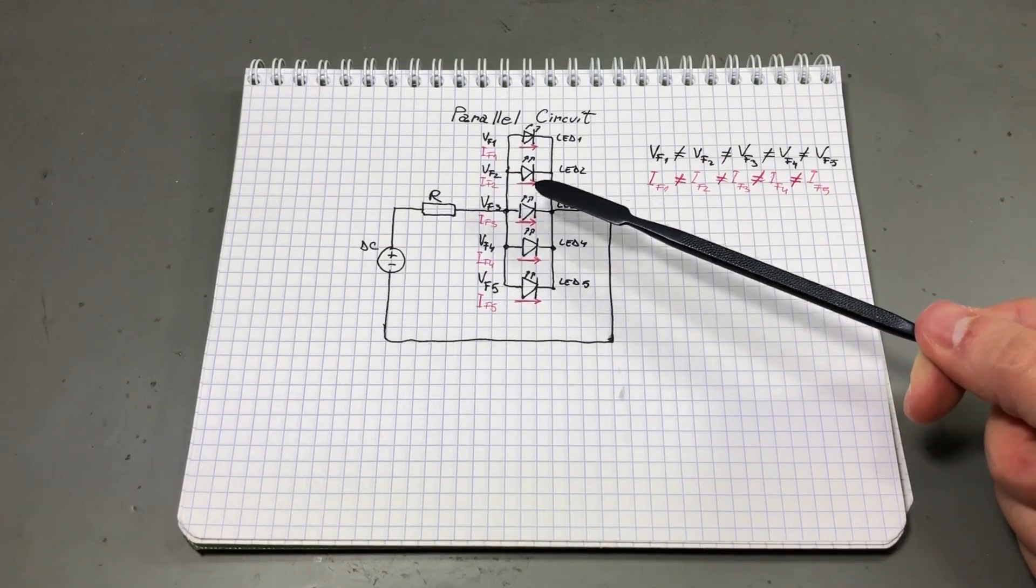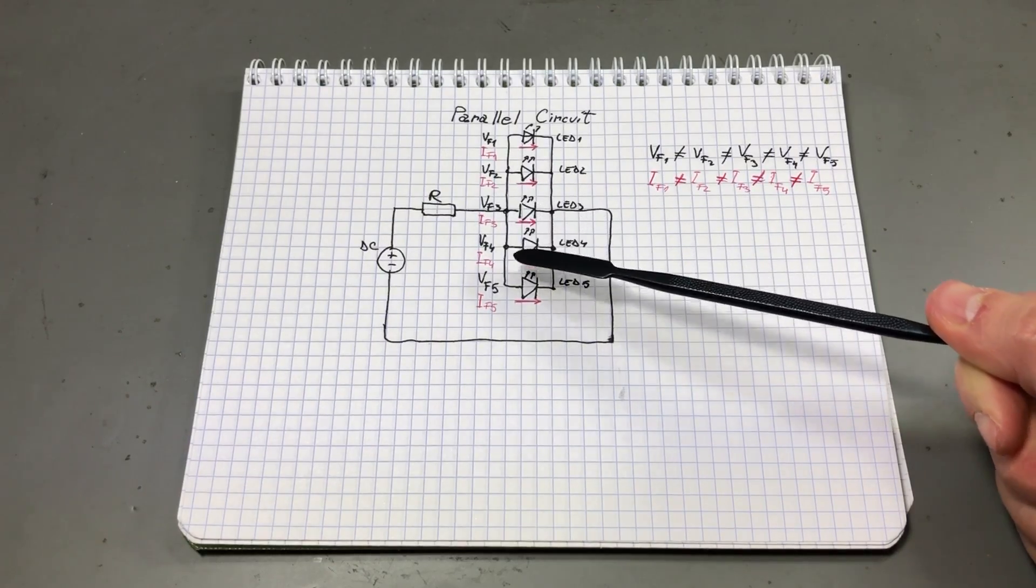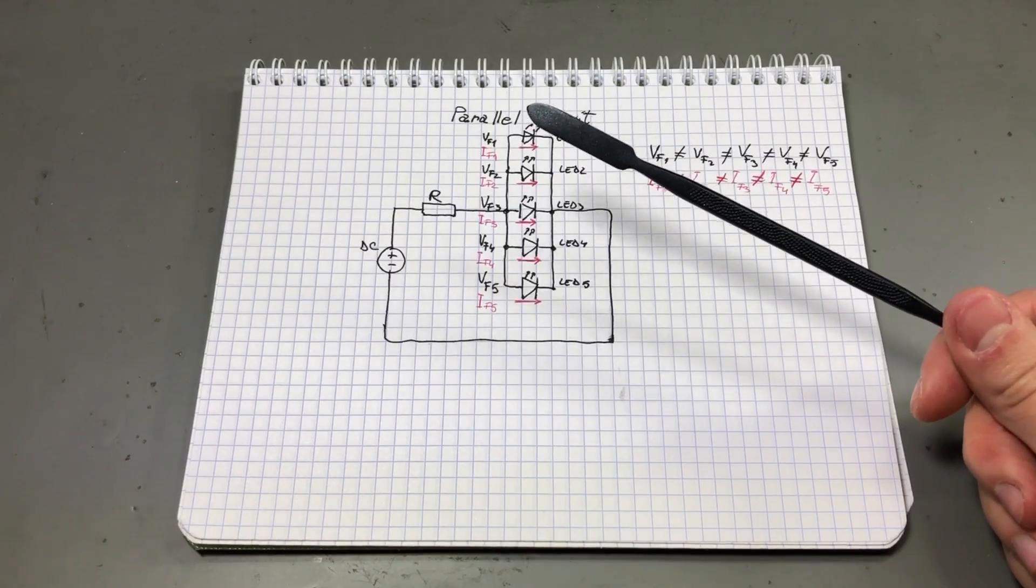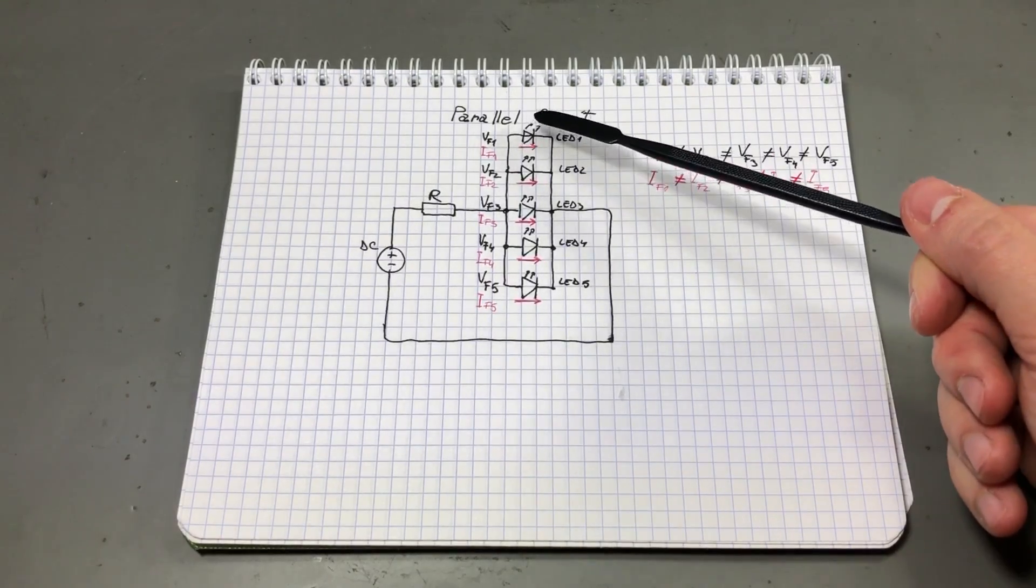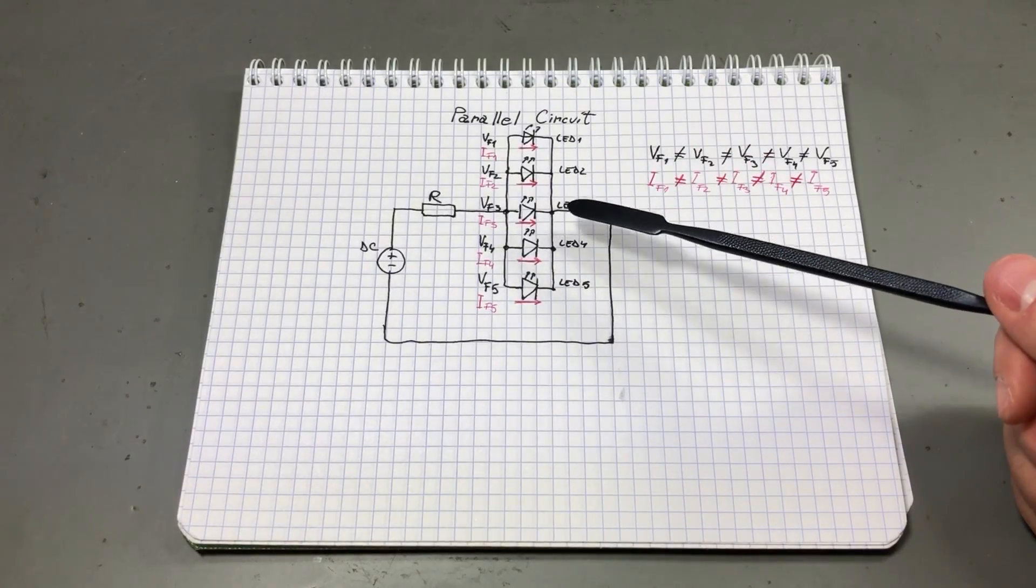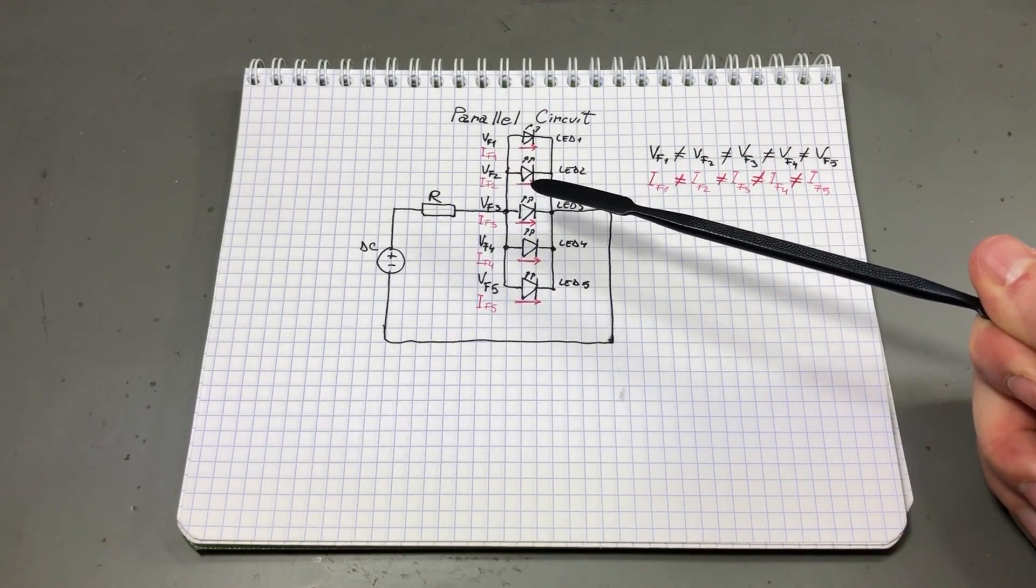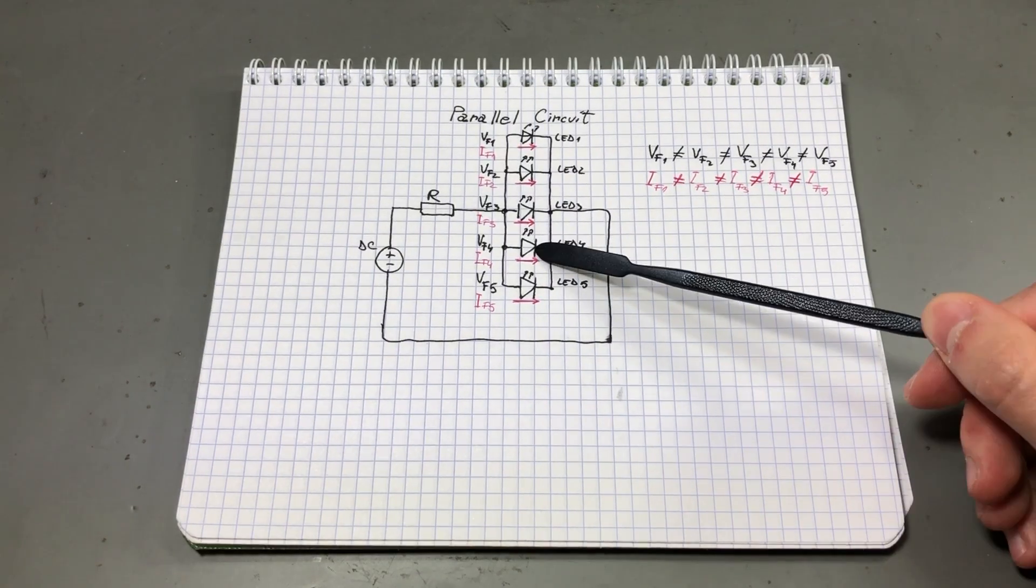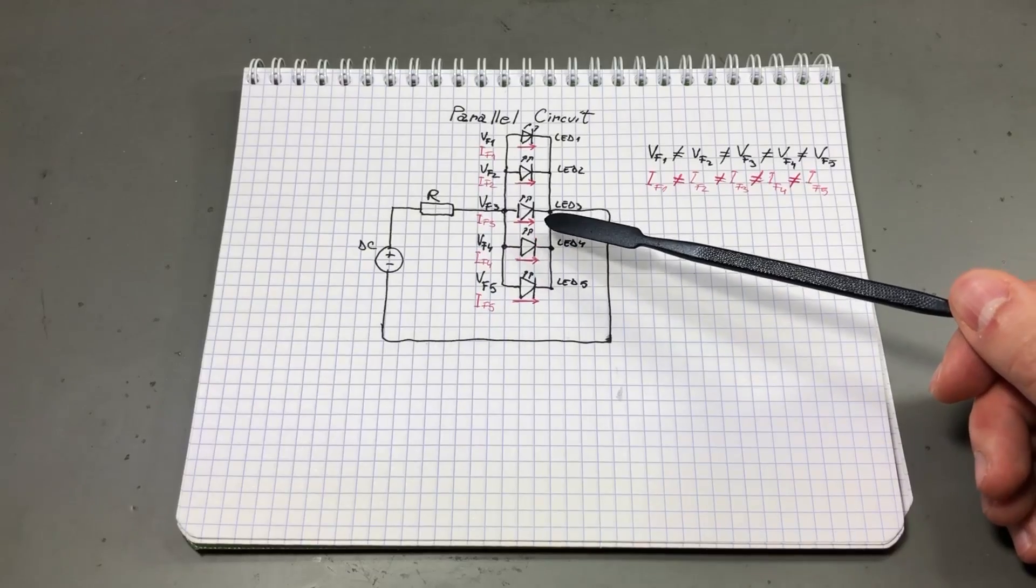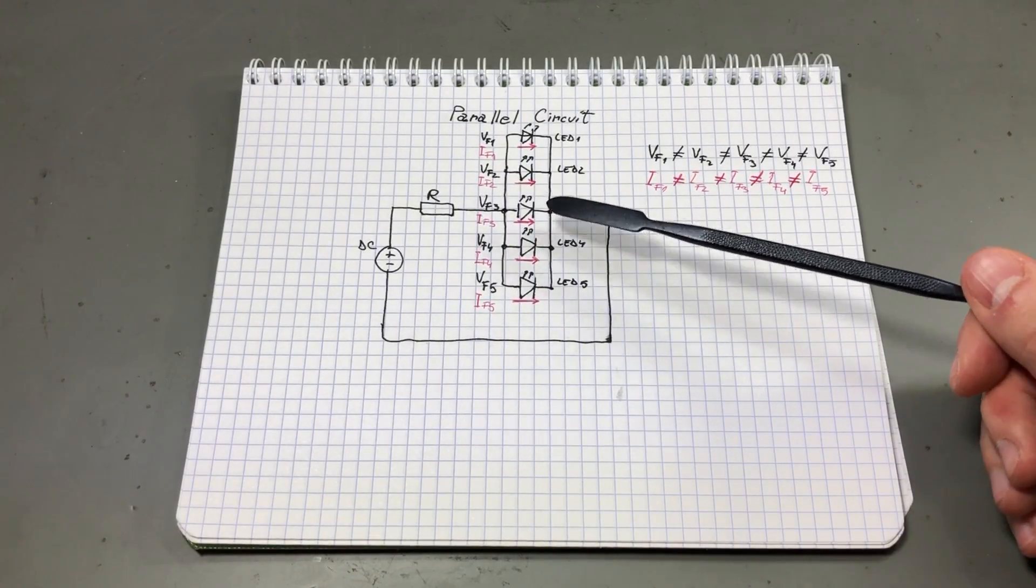First, due to variations in the manufacturing process each LED will have a slightly different forward voltage. This means it will draw a slightly different current which could result in uneven illumination over the whole string of LEDs or even failure of one of the LEDs if it's driven over the specified current.